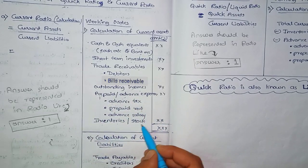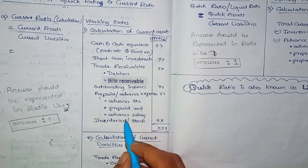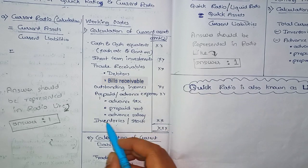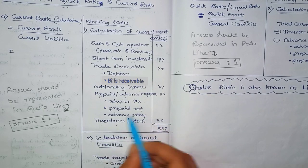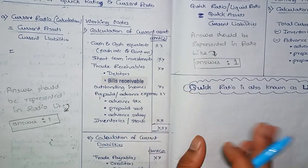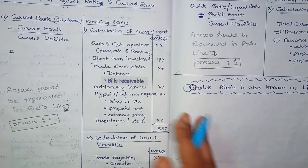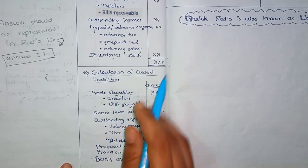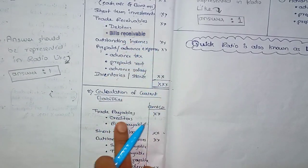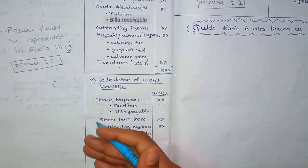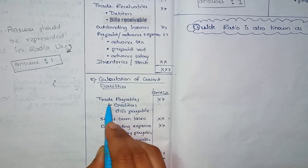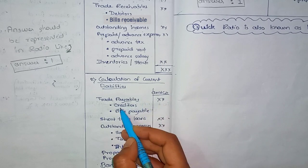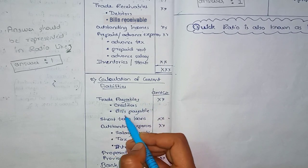Next is inventory, also called stock — goods held for sale. This is a current asset, a short-term valuable thing. On the other side, trade payables is a liability — that is creditors and bills payable.